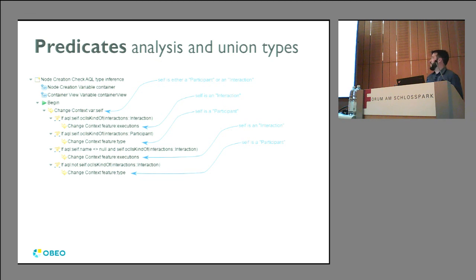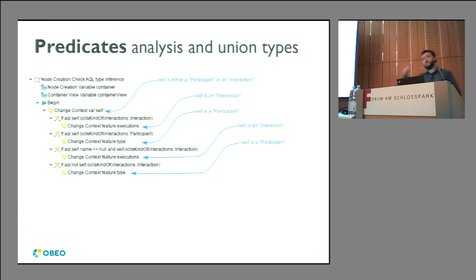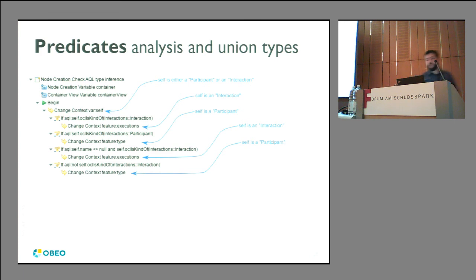There's also powerful type inference. Here's a Sirius tooling example where the self variable is either a ParticipantInstance or an InteractionInstance. When you write an if-condition checking if the type is Interaction, AQL figures out that within that branch the type is Interaction, and within the other branch the type is Participant. This means you don't have to cast after a type check — AQL figures it out for you.